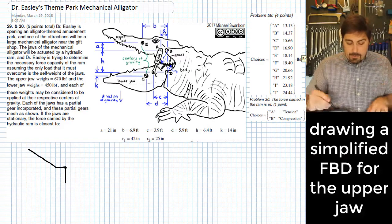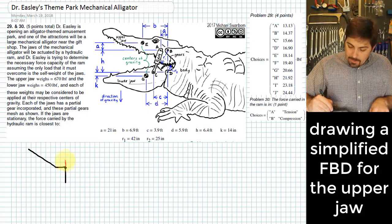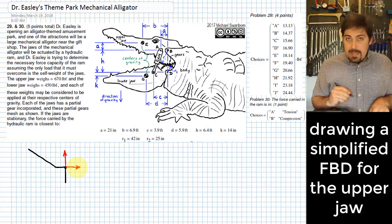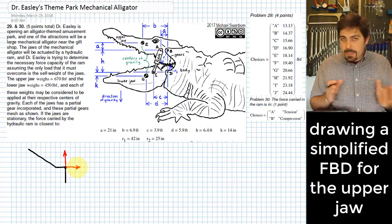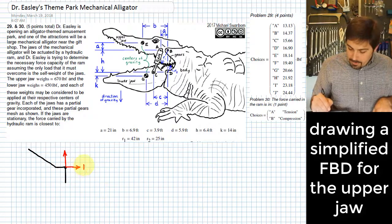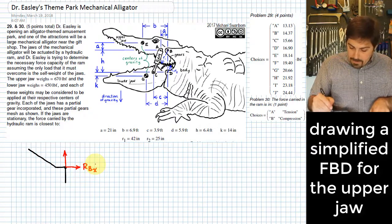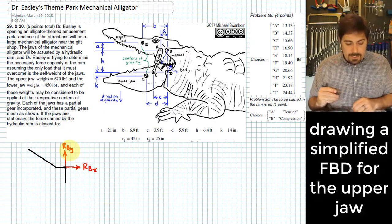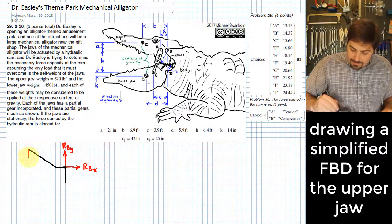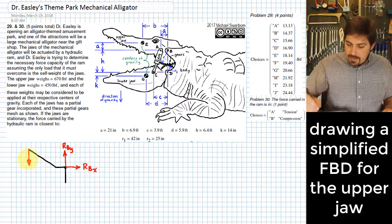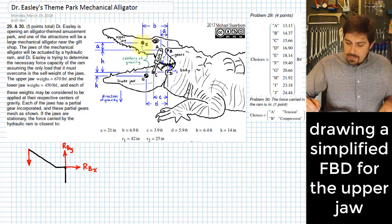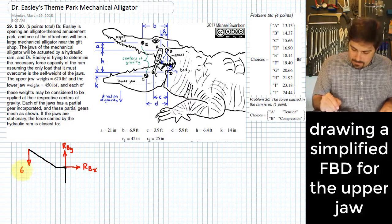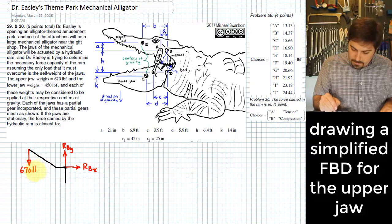So what I need to start doing now is putting on this body all of my different forces that might exist. There's a pin that exists at B that keeps this body from moving left or right or up or down. So I'm going to put on here RBX and up here RBY to indicate that that pin can't move. The next thing I'll do is show the weight. Weight acts straight down at the center of gravity. That upper jaw weighs 670 pounds.